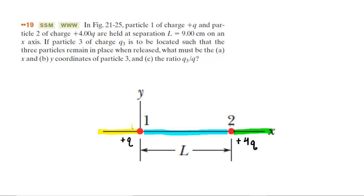We've colored three regions in the diagram: a yellow, blue, and green region. Our first goal is to figure out where we're going to be able to place Q3 so that the net force on all of the charges is zero.